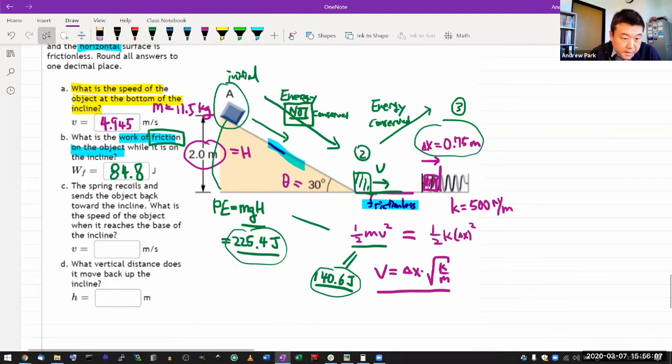And if you are doing this experiment, I think that's where you just make the assumption that the difference, we blame that on friction. And we are not investigating much further. Okay, spring recalls and sends the object back towards the incline. What is the speed of the object when it reaches the base of the incline? Oh, that's an easy question. Because this entire process here is an energy conserving process. The way back, I think energy conserved on the way back too. So, that means when it comes back, it should have the exact same speed it had when it was here going to the right. So, it should be 4.945.